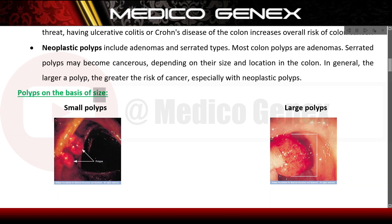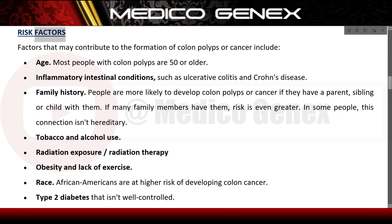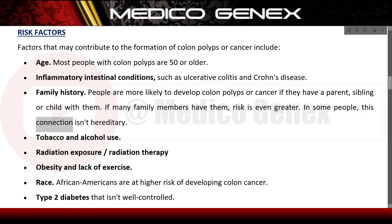Polyps are also classified on the basis of size into small polyps and large polyps. Risk factors that may contribute to the formation of colon polyps or cancer include: age — most people with colon polyps are 50 or older; inflammatory intestinal conditions such as ulcerative colitis and Crohn's disease; family history — people are more likely to develop colon polyps or cancer if a parent, sibling, or child has had them, and risk is even greater if many family members are affected; tobacco and alcohol use; radiation exposure; obesity and lack of exercise; and race — African Americans are at higher risk of developing colon cancer.